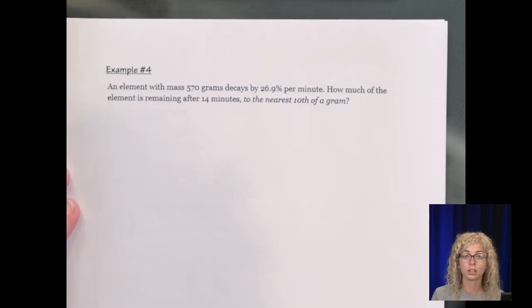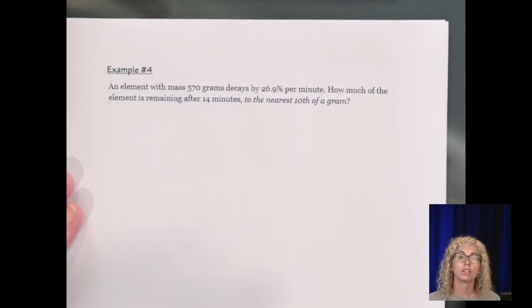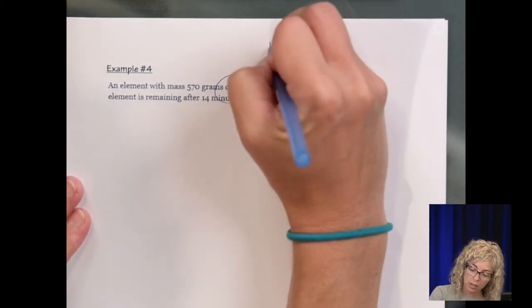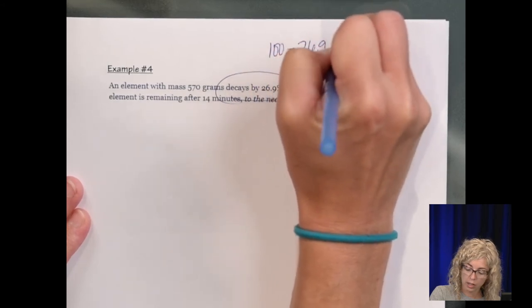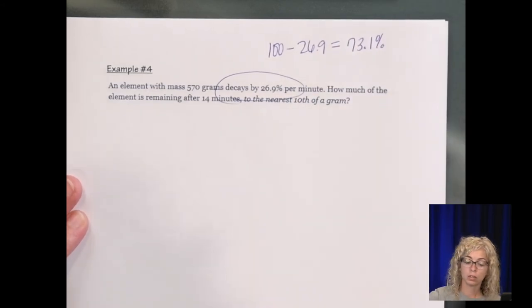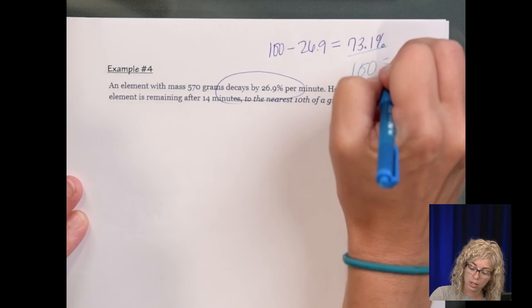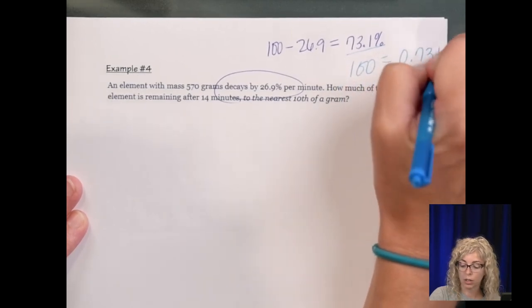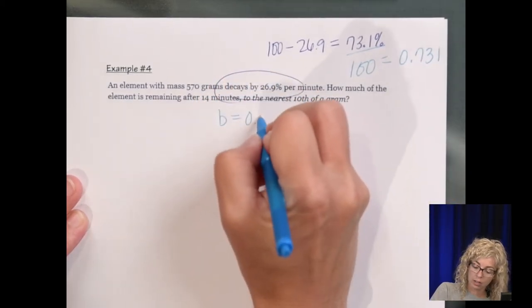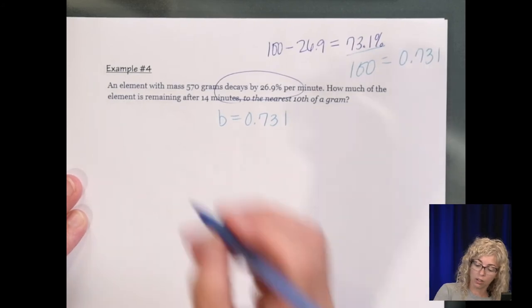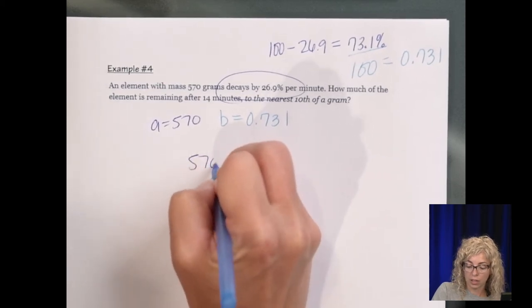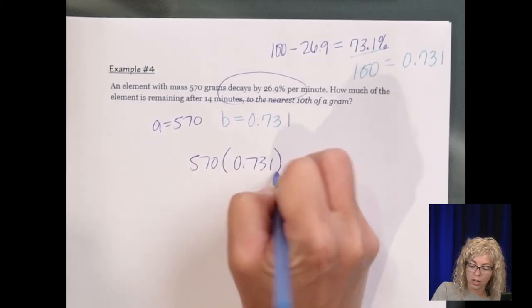Number four. An element with a mass of 570 grams, that's how much it starts, it decays by this much. So we take 100%, subtract 26.9, and we get 73.1%. Now to go to a decimal, we divide by 100, and we get 0.731. It just moves the decimal place over. So that's our rate of decay. And then our A value is 570.